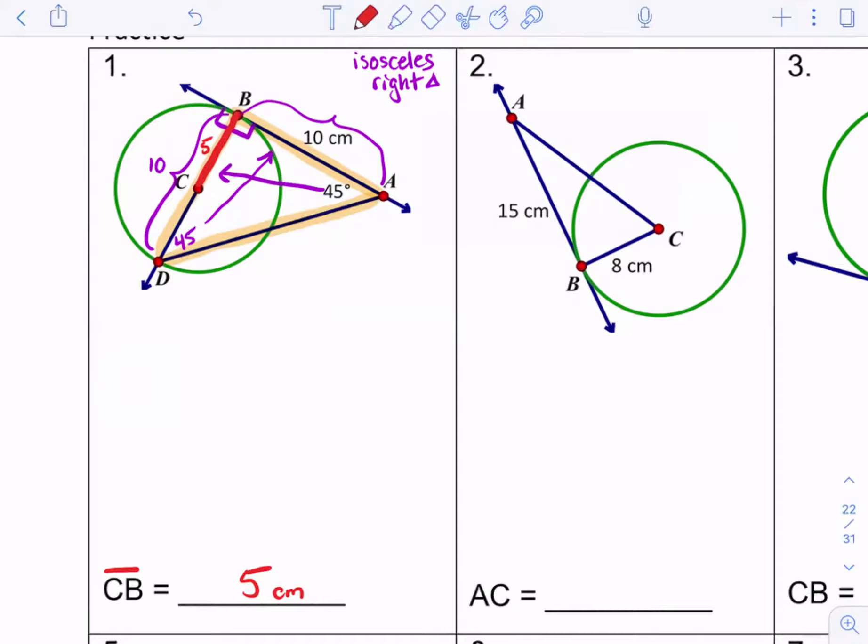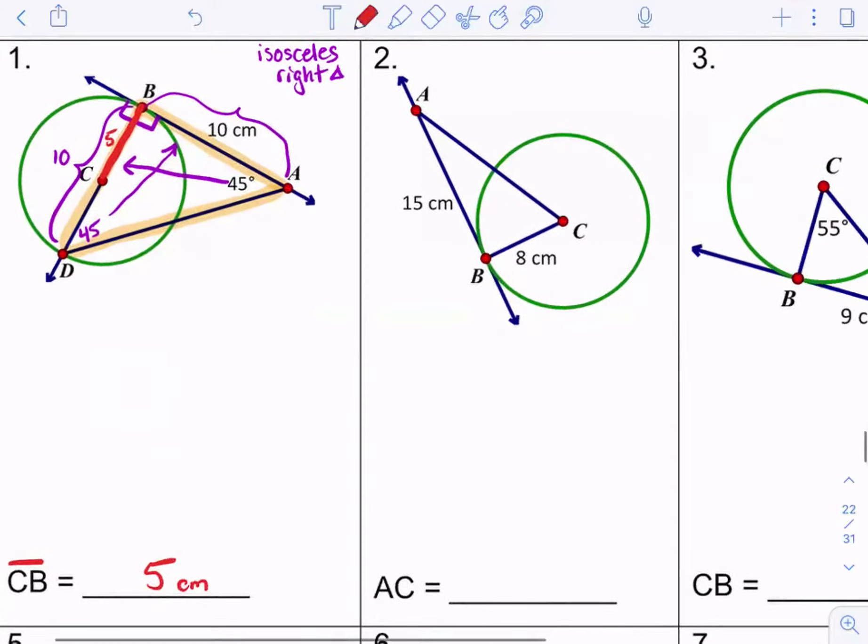Because we have the diameter is 10, which means the radius is 5. Okay. There we go. So we applied several rules to solve this. Okay, number two. So again, I see the similar thing happening here. We have a tangent line connected to a radius. So that's going to create a right angle, right by BC.